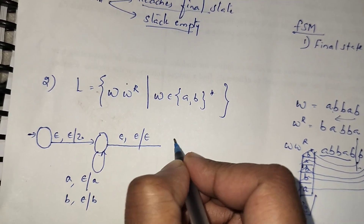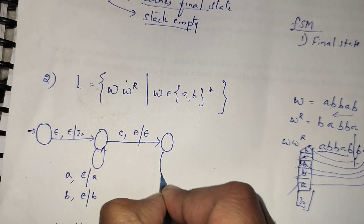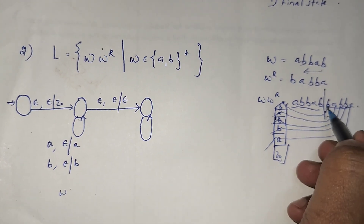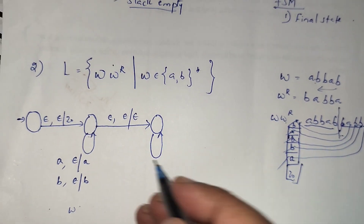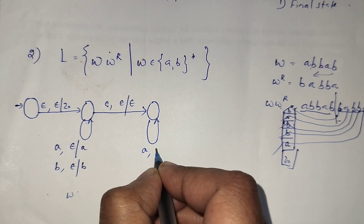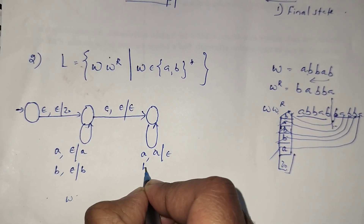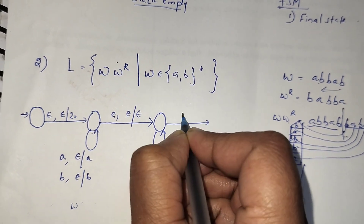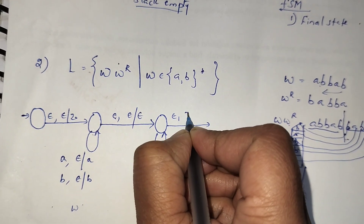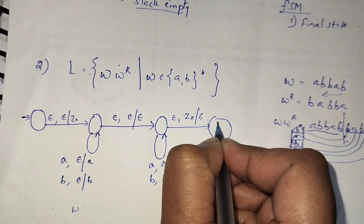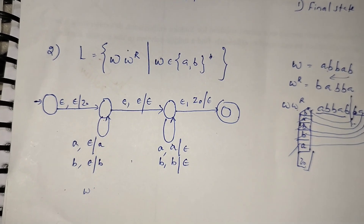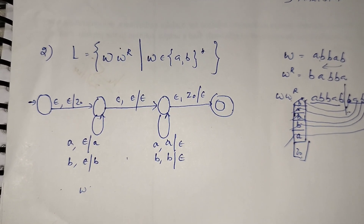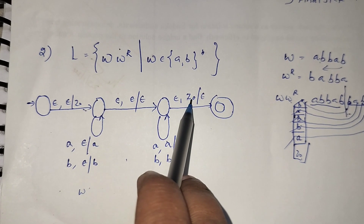After the state change, we enter the reverse-matching phase. Whenever I see a, I pop a without pushing anything; whenever I see b, I pop b without pushing anything. Finally, the stack contains only Z0, so without seeing any input symbol I pop Z0 without pushing anything, thereby reaching the final state. This is the automata for this problem. The first step is always pushing Z0 to the stack, and the last step is popping Z0 from the stack.